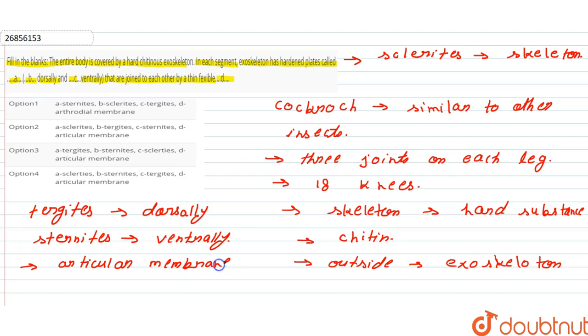So here, fill in the blanks: the entire body is covered by a hard cutaneous exoskeleton. In each segment, the exoskeleton has hardened plates called sclerites, which are tergites dorsally and sternites ventrally, that are joined to each other by a thin, flexible articular membrane.